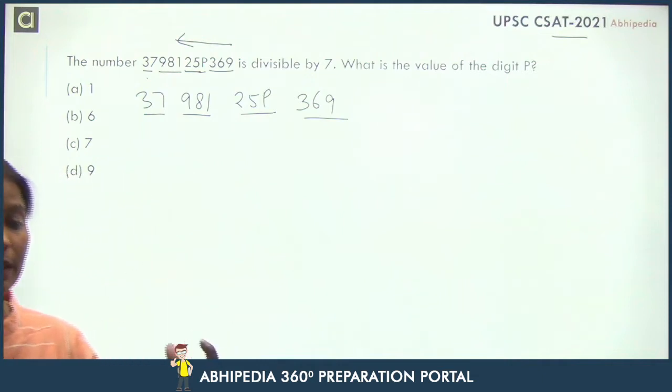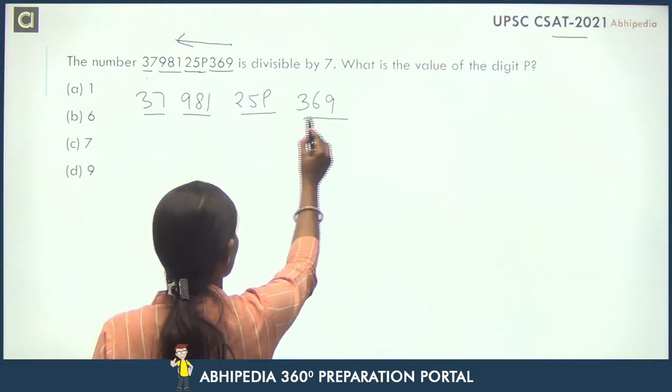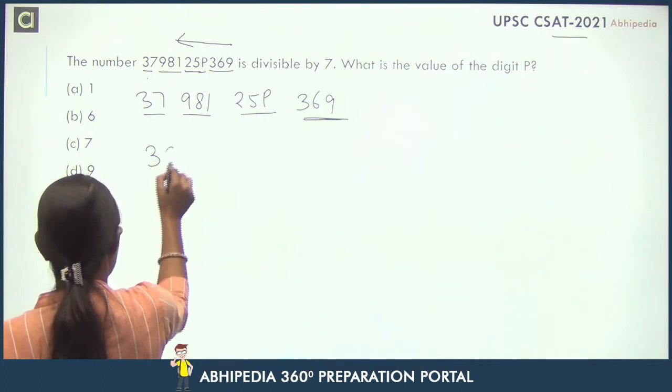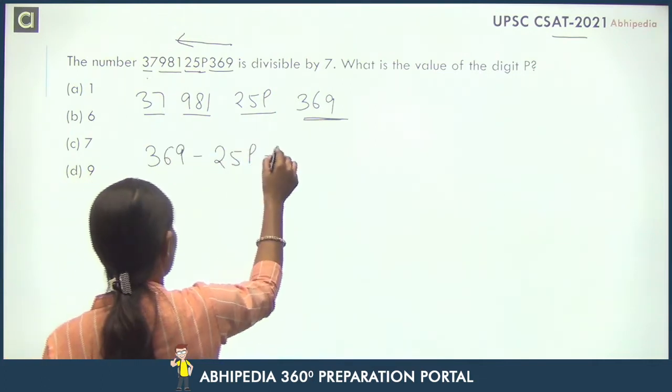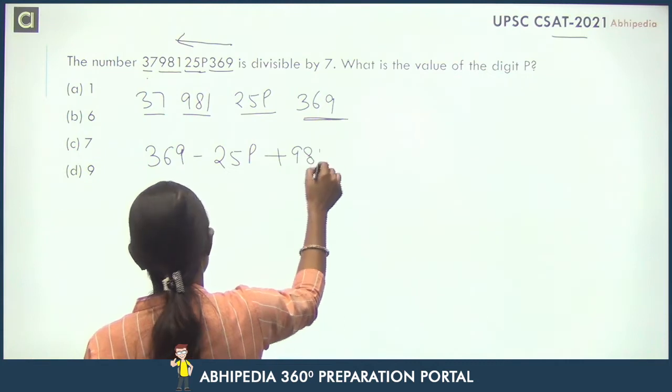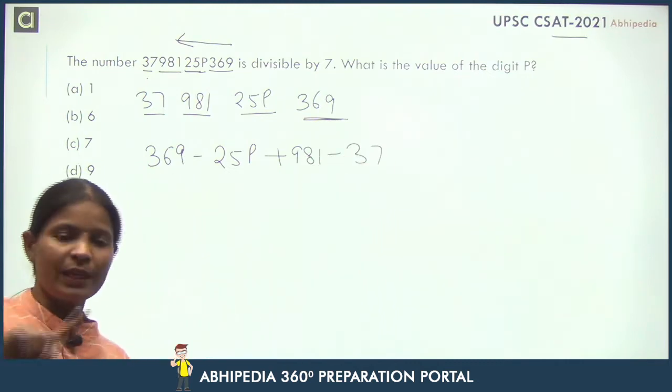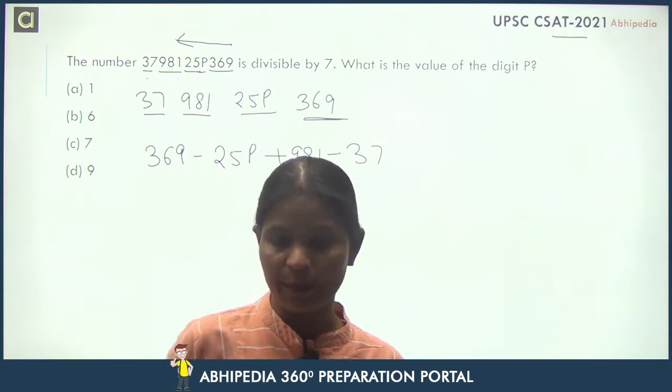Next step, what do we have to do? We will write this: 369 minus 25P plus 981 minus 37. One time plus, one time minus, one time plus, one time minus. Simple.